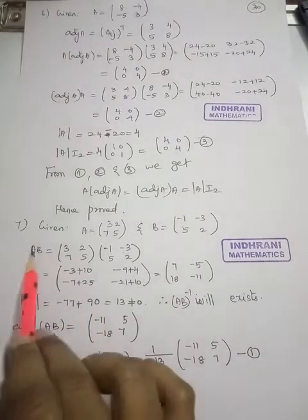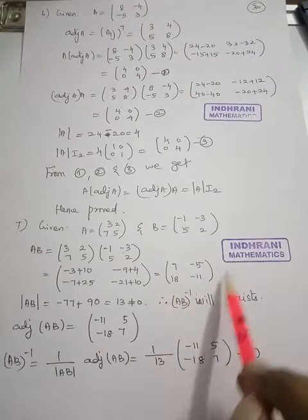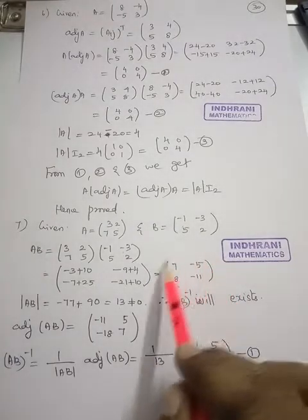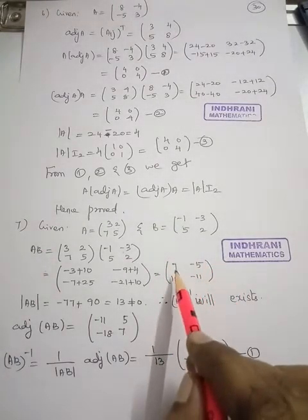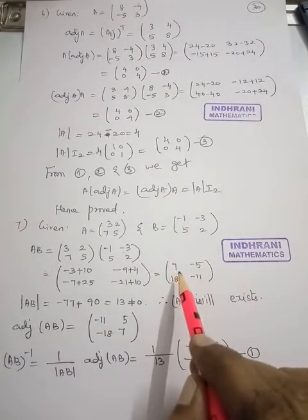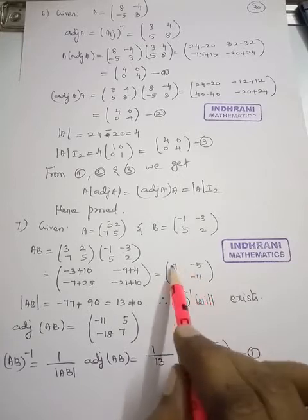Next we want to find the adjoint of AB. For a 2×2 matrix, you interchange the leading diagonal elements and change the signs of the other diagonal elements. So adjoint of AB gives the matrix with elements minus 11, 5, minus 18, 7. Then AB inverse equals 1 by 13 into adjoint of AB, giving 1 by 13 times that matrix. This is called equation number 1.